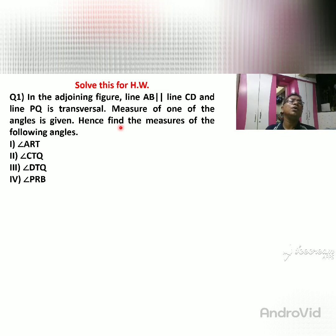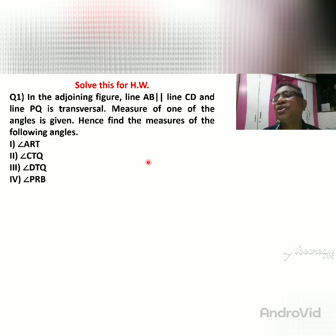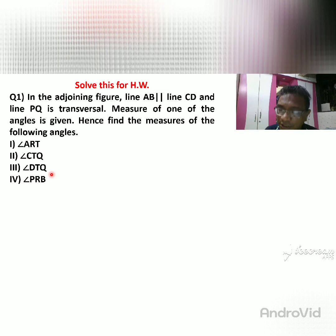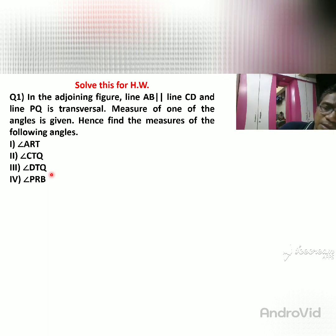The homework is practice set 2.1, problem number 5. In the diagram, AB is parallel to CD and line P is the transversal, and one angle measure is given. The diagram is in the textbook — use it to find the required angles. Have a nice day. Stay home, stay safe.